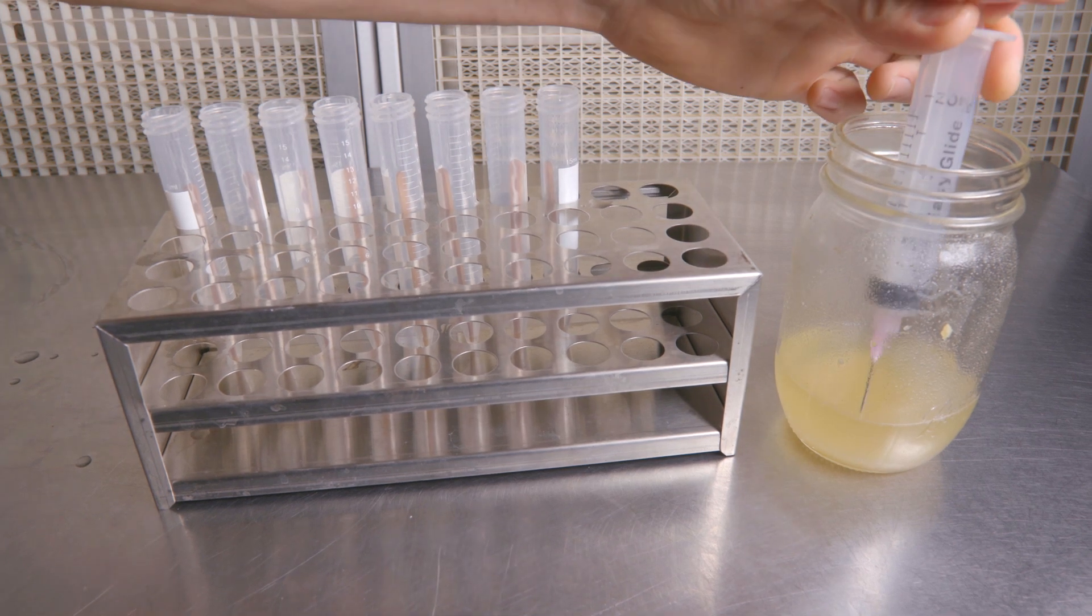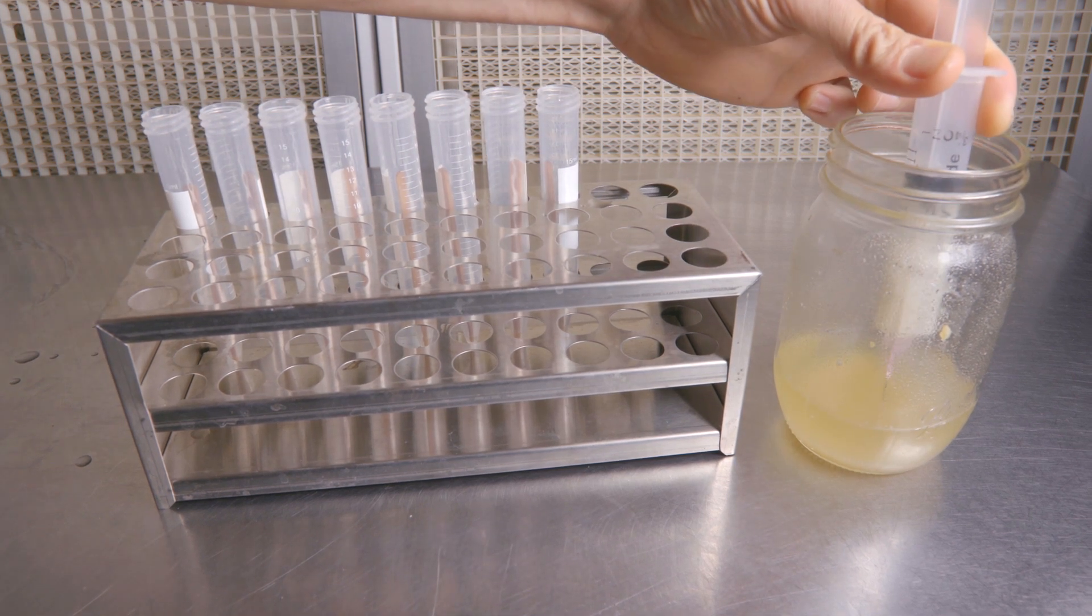Now cap off your slants and agar and place everything in your autoclave or pressure cooker for sterilization. Now it's time to measure out our media.